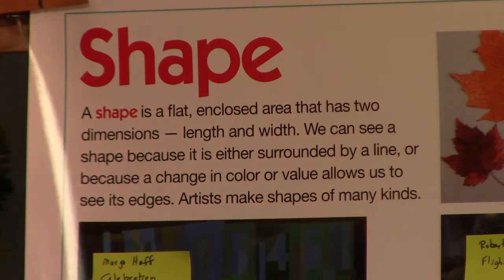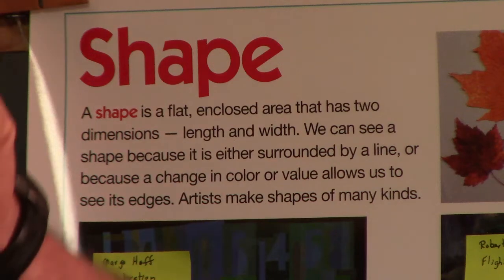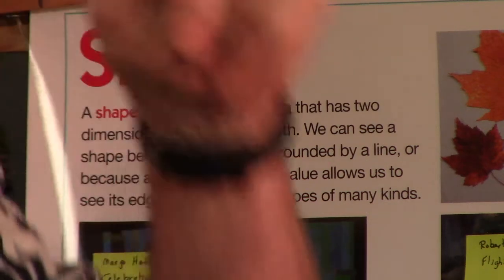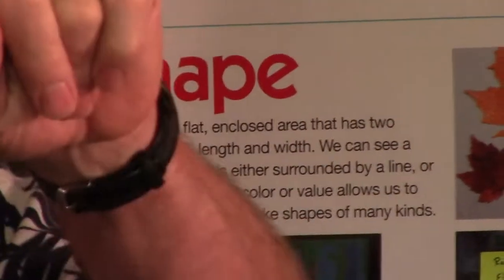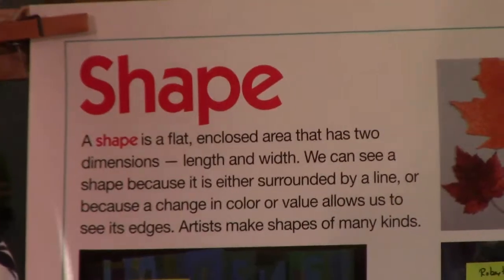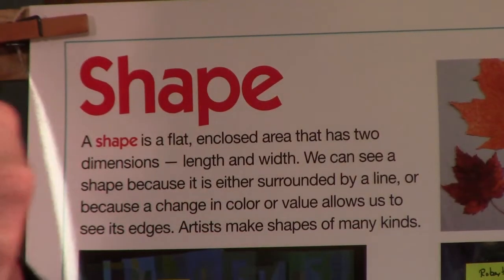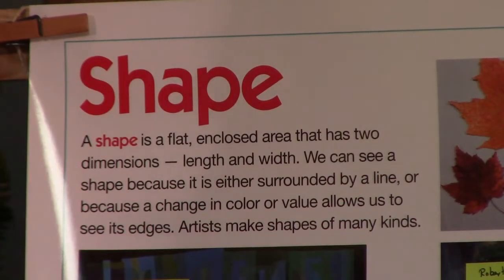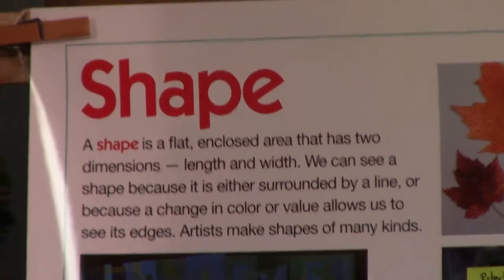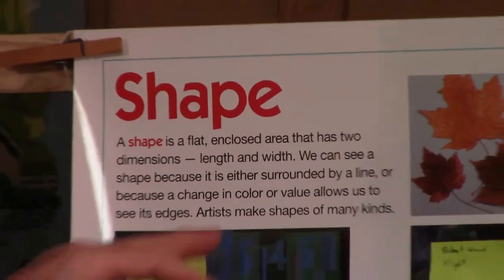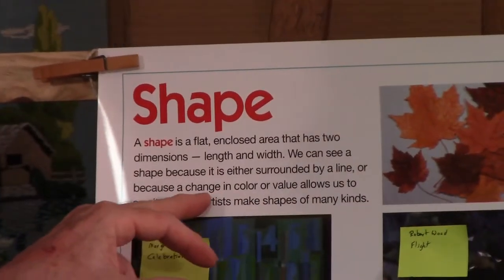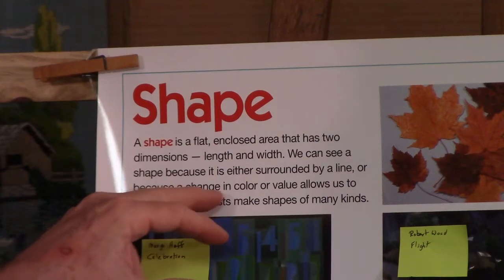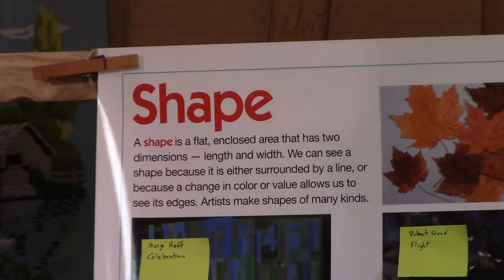We can see shape because either it is surrounded by a line — if you start at one area and come around and meet the beginning with the end, it creates a shape. Or you can see a shape because of a color change or value, and that's how you can see the edges.